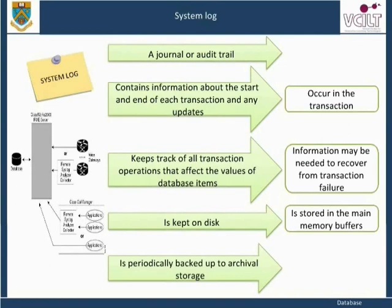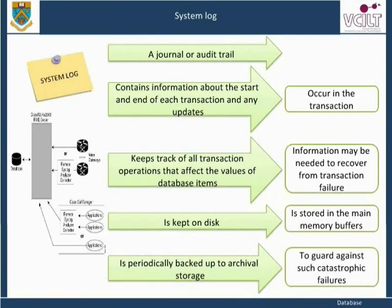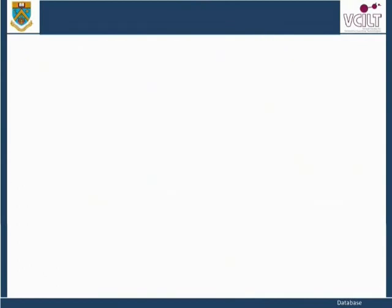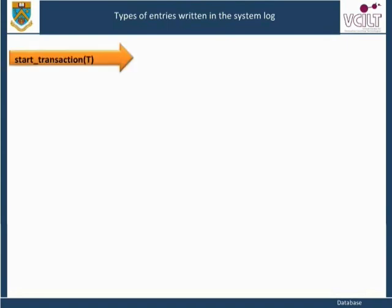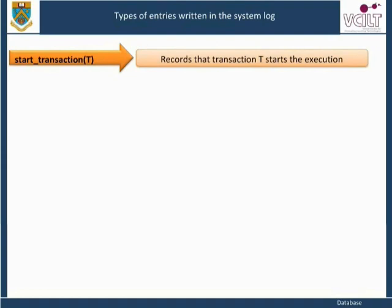In addition, the log is periodically backed up to archival storage, e.g., tape, to guard against catastrophic failures. Let us now look at the types of entries that are written to the log. In these entries, T refers to a unique transaction identifier that is generated automatically by the system and used to uniquely label each transaction. The log entry 'start transaction T' records that transaction T starts its execution.